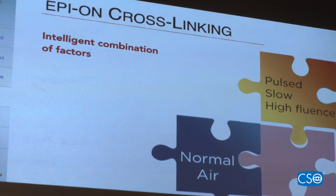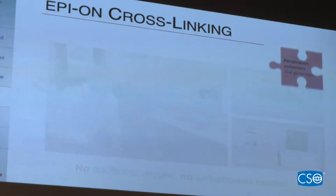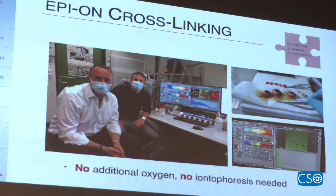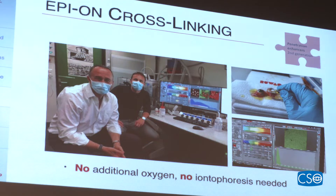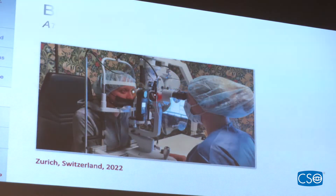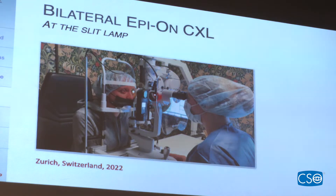The next idea was to make it even simpler and remove iontophoresis. This is now possible using a new penetration enhancer. After three years of research on riboflavin diffusion, we found an alternative, and epi-on cross-linking is now also possible at the slit lamp — including bilateral epi-on cross-linking at the slit lamp, as shown in this case.